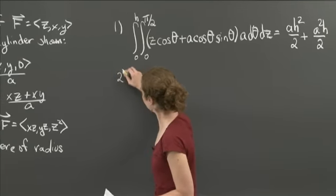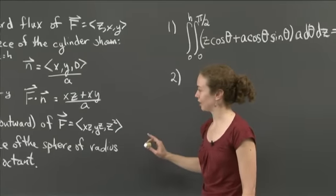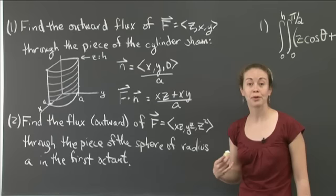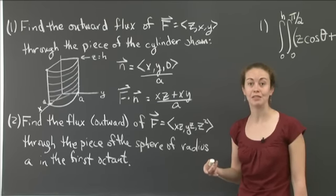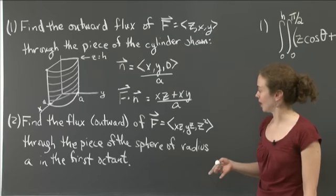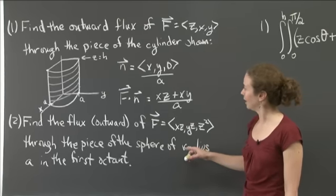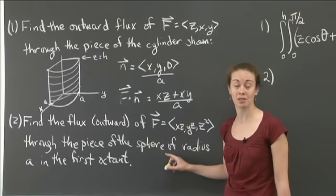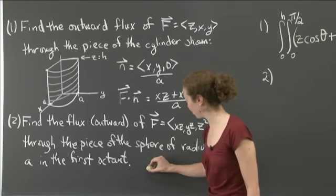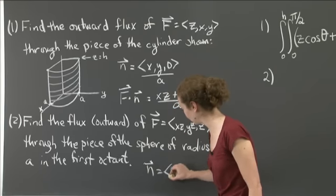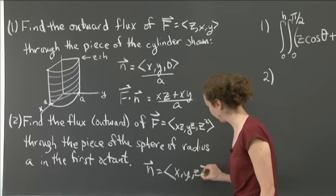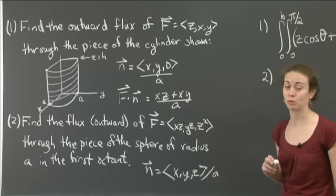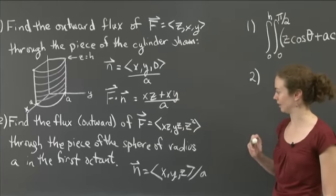Now let's look at problem 2. We have our vector field and the surface is a piece of a sphere, so we parameterize using theta and phi. The normal on a sphere, similarly to the cylinder, is (x, y, z) divided by a — since every point on the sphere of radius a satisfies x² + y² + z² = a².